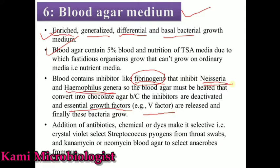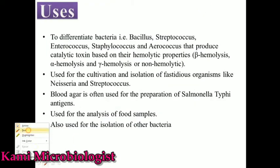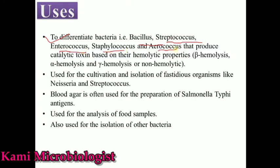This media can also be made selective by adding antibiotics, chemicals, and dyes. If we use dyes like crystal violet, it will be especially used to select Streptococcus pyogenes isolated from throat swabs. If we add kanamycin or neomycin antibiotics, it will select anaerobic bacteria isolated from pus. This media is mostly used for the isolation of Bacillus, Streptococcus, Enterococcus, and Aerococcus. We can detect these bacteria based on their hemolytic properties — some produce beta hemolysis, some alpha, some gamma, and some are non-hemolytic.